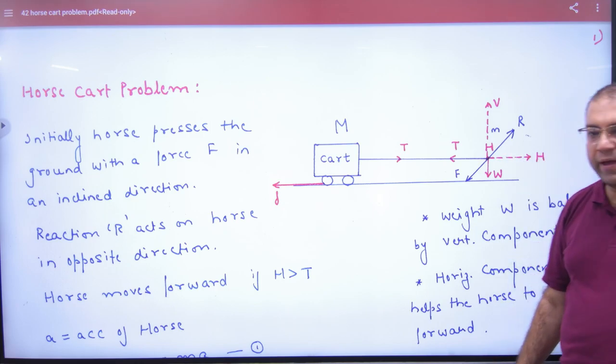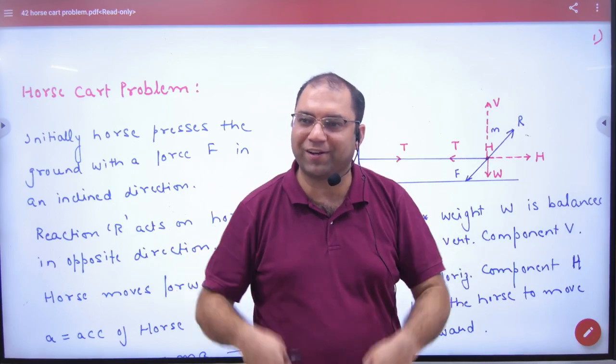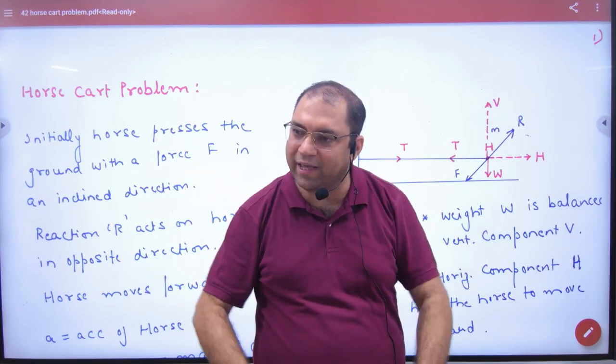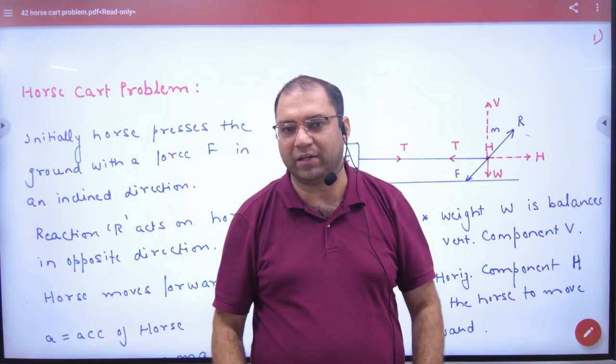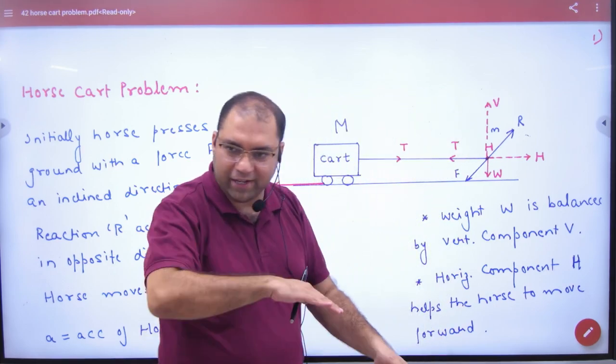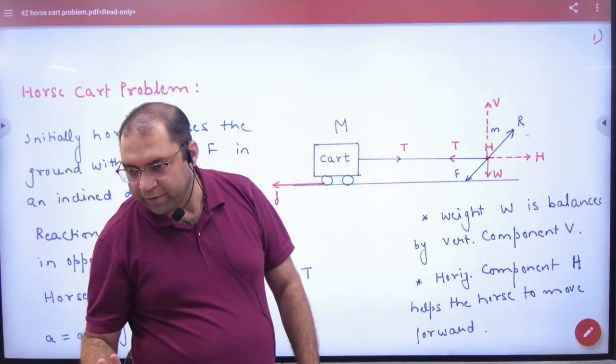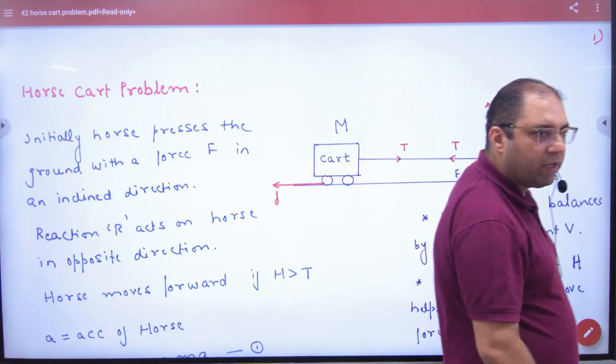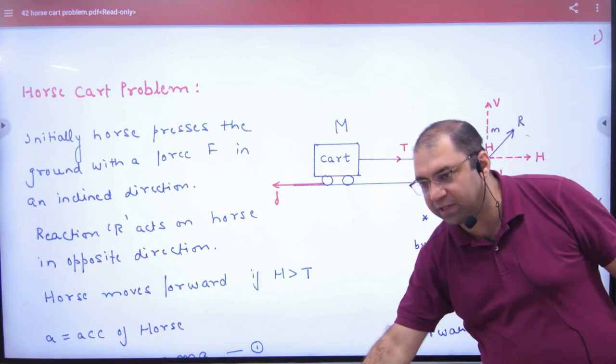Now when the horse goes, it doesn't go straight. It puts force on the ground and goes forward. If you just jump and put perpendicular force on the ground, you can't go forward. We need to put force on the ground at an angle so that we can get help from friction. This is what happens. The horse also does this - it puts force on the ground, applying force F on the ground.